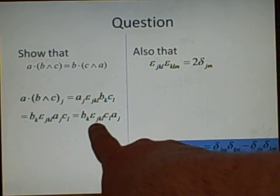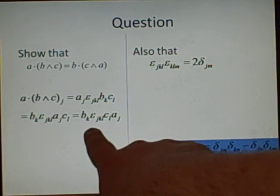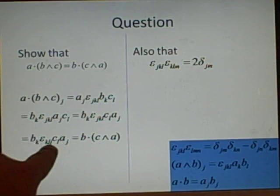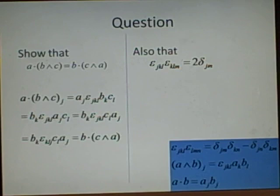So we'll go to minus epsilon jlk, then swap it again. We'll have epsilon lkj. And then this, of course, is just equal to this, because this is the cross product of c cross a, and this is just the dot.